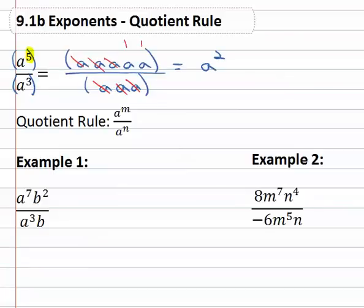Looking for a pattern, we could have looked at the exponents of five and three, and known that we'd end up with two simply by subtracting the exponents. If three are going to divide out, five minus three, two will be left.